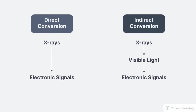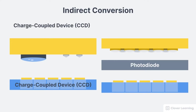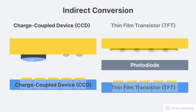Next, let's talk about indirect conversion DR. The essential difference between direct and indirect conversion DR systems is that indirect systems first convert the invisible x-ray photons into visible light photons, which are then converted to an electrical signal. Indirect conversion DR systems can be placed in one of two categories: one that uses charged coupled devices, called CCDs, or one that uses TFTs.